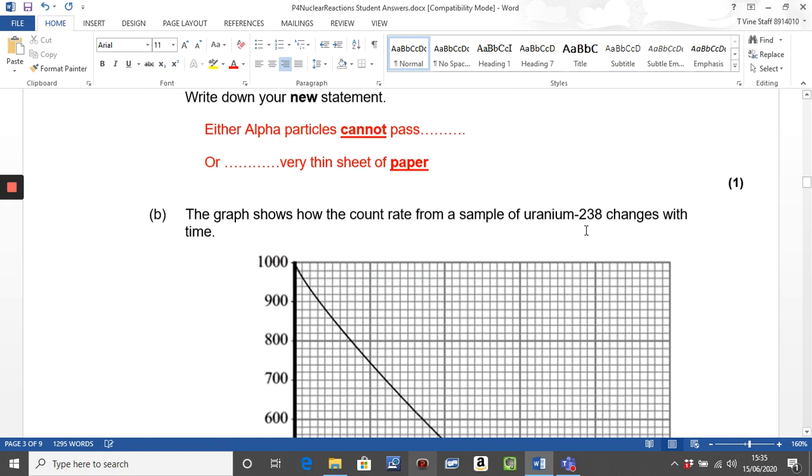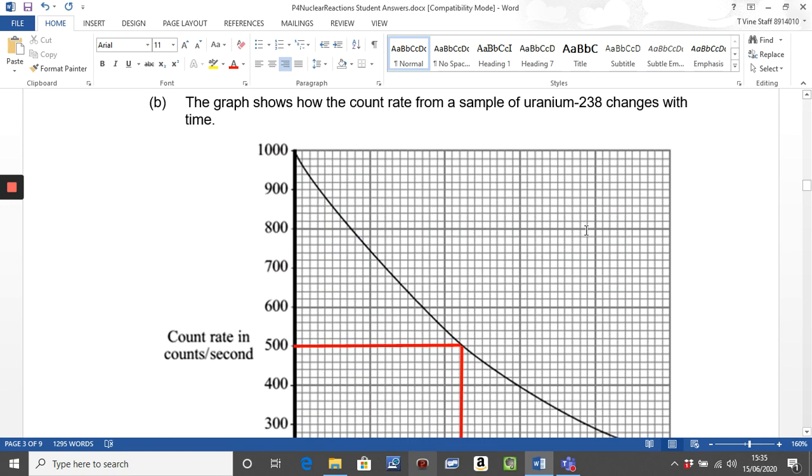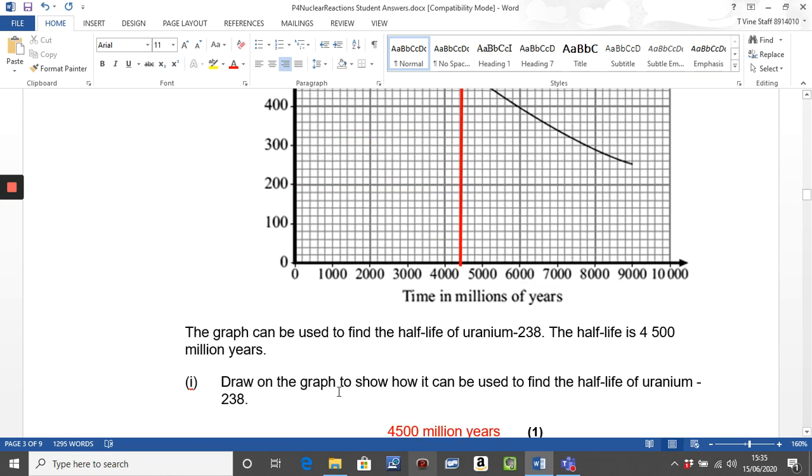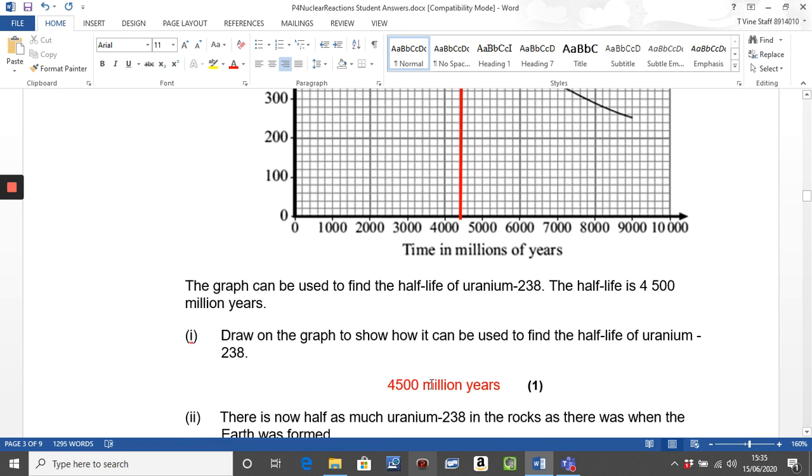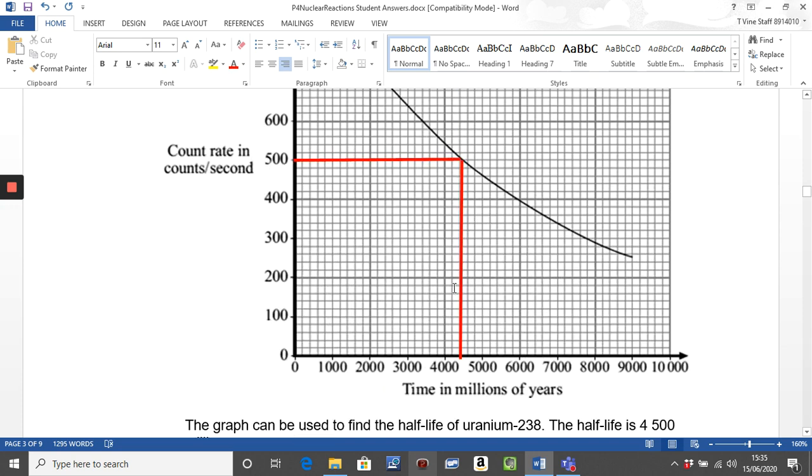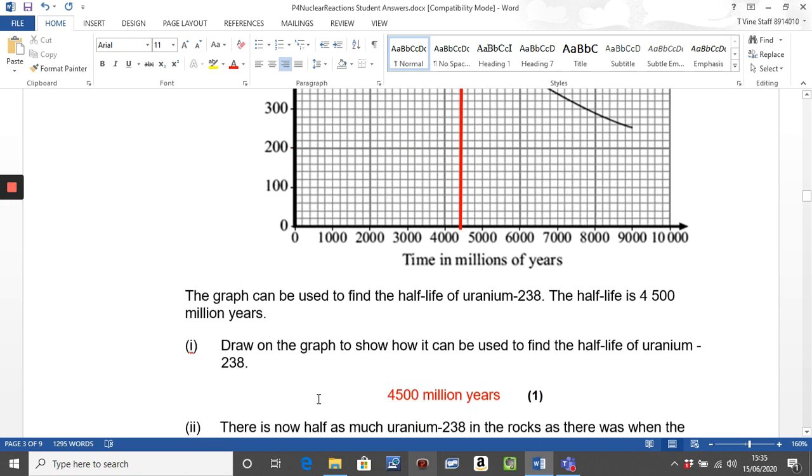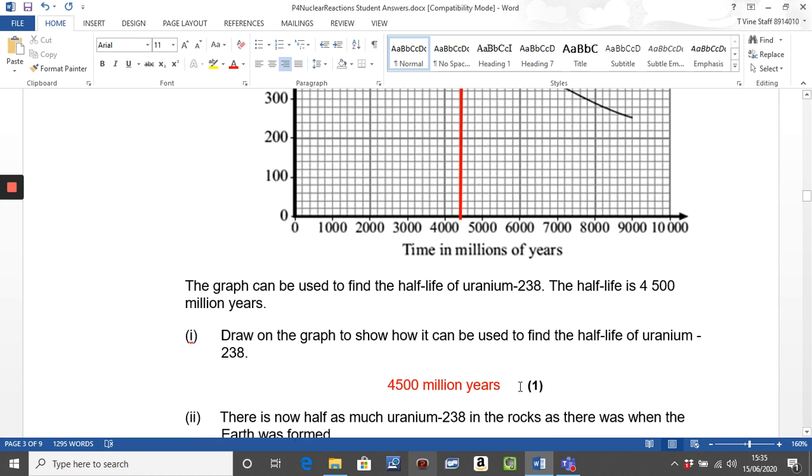Look, here's another one of those half-life curves again. But this time the question was very definite. Draw on the graph to show that it can be used to find the half-life. So this number down here wouldn't get you a mark. The red lines on the graph is what gets you the mark. So it's really important, and so some of you lost that mark because you didn't draw on the graph.